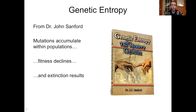Genetic entropy is an idea from Dr. John Sanford, first coined in his 2005 book, Genetic Entropy and the Mystery of the Genome. The idea is that genomes in general, and the human genome specifically, are degenerating inevitably. Sanford's theory is that mutations accumulate within populations — this is inevitable — fitness declines, and ultimately extinction will result.